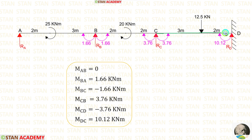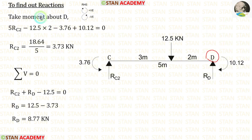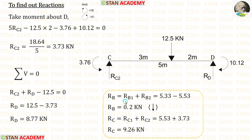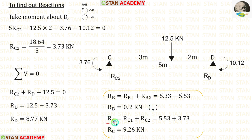Now let us take span CD and calculate the vertical reactions. There are two moments: MCD acting anticlockwise and MDC acting clockwise. Taking moment about D, RC2 = 3.73 kN. Applying the vertical force summation, RD = 8.77 kN. At point B, adding RB1 and RB2 gives RB = −0.2 kN (acting downwards). At point C, adding RC1 and RC2 gives RC = 9.26 kN.